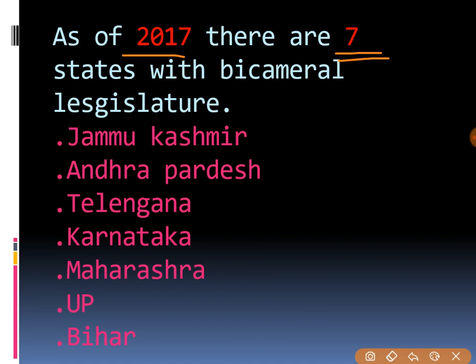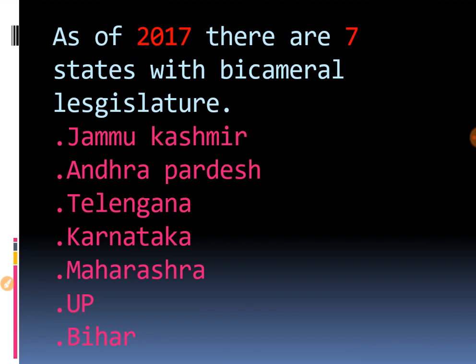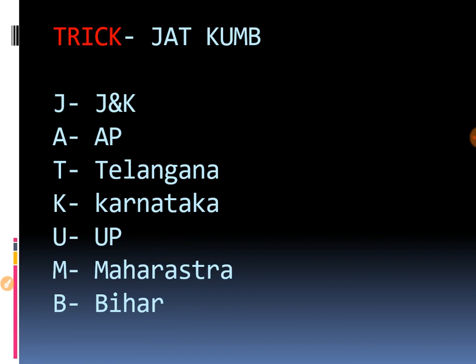Those seven states are Jammu Kashmir, Andhra Pradesh, Telangana, Karnataka, Maharashtra, UP, and Bihar. Telangana was separated from Andhra Pradesh. Now let's see the tricks to remember these states.